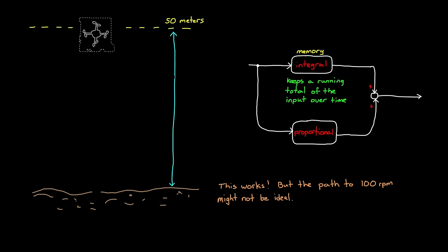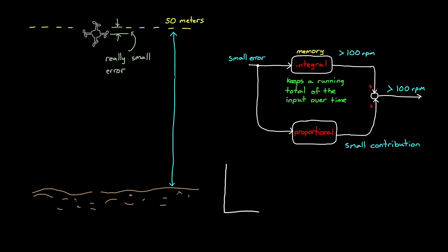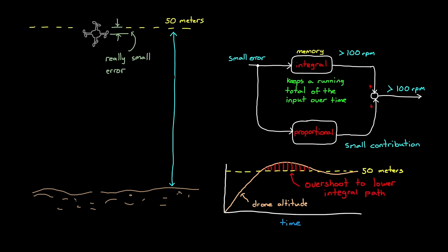Imagine this situation. Right before we get to 50 meters, there's an interesting situation that can occur. The proportional path is basically zero, since at this point the error is so small. But depending on how the drone got to this height, the integrator may have summed to a value over 100 rpm. This would cause the drone to keep rising, which is what we want since we're below the 50 meters. However, to remove that excess propeller speed, the drone will have to go higher than our goal to create a negative error. This negative error, when summed, lowers the output of the integrator and slows the propellers down. This overshooting of the goal might not be desired.